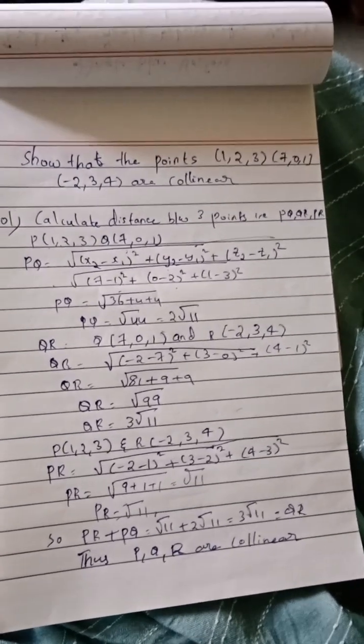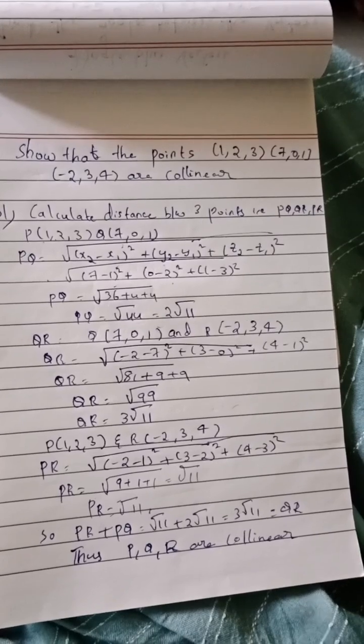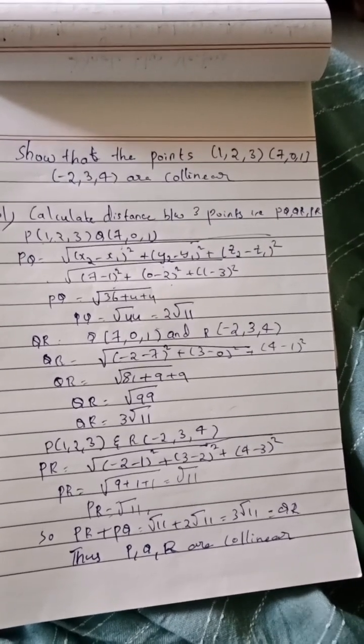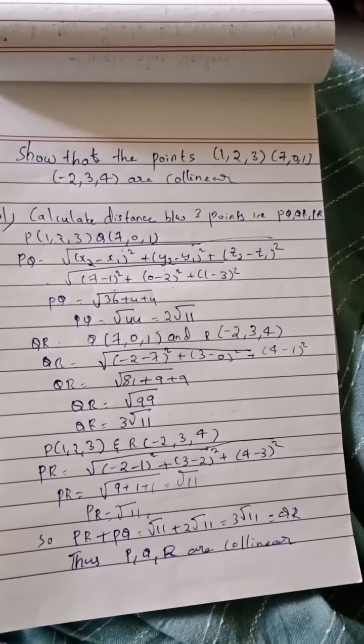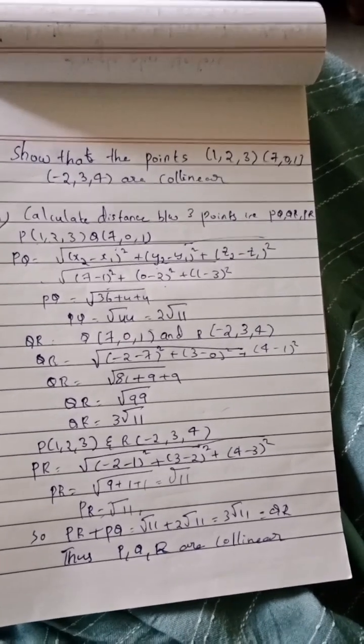To find if the points are collinear or not, we have to follow PR plus PQ. If we add both, then we'll be getting QR. If it is the same answer, then we can say that is collinear.